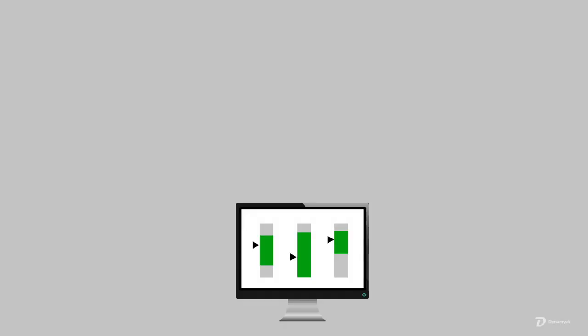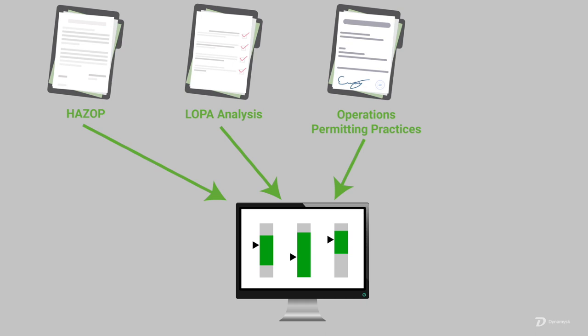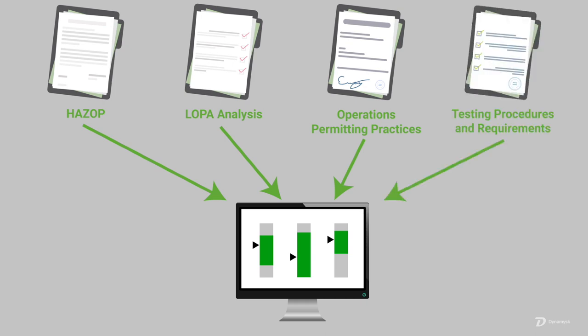I've heard of systems — though I haven't been part of the implementation yet — but these systems can tie together the HAZOP, the LOPA analysis, the operations, permitting practices, and the testing procedures and requirements of the SIS all into one system. That system can show operations when a safety system has been degraded enough that steps should be taken, or that risk in degradation has increased to levels that require intervention. Anything that ties that many layers of complexity or that many databases together to make things safer and help operations maintain the overall integrity of the system required for safety — I think is pretty cool.